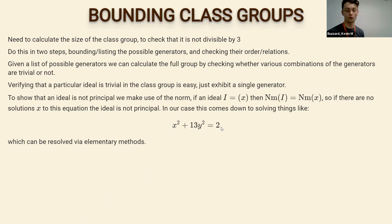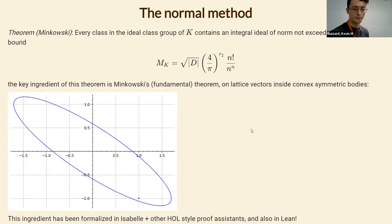In this case you can clearly see that an ideal of norm two cannot be principal, because the equation has no solutions.